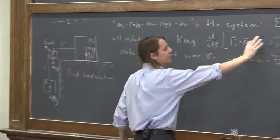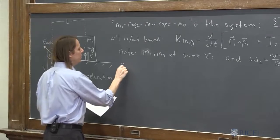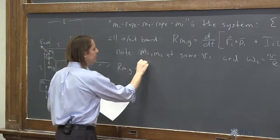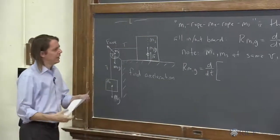So I'm going to use these to rewrite this. So we're going to say, big R, M1G, that's the torque, is the time rate of change of, and here we go.